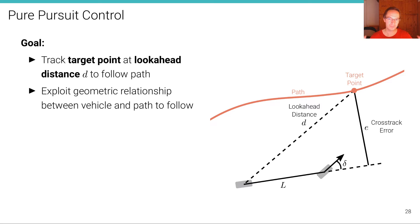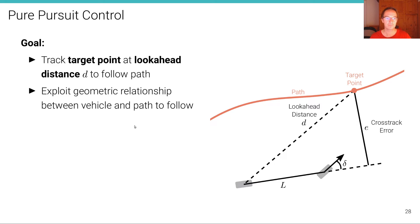Given the current state of the vehicle, knowledge of the location of the center of the rear wheels, and the look-ahead distance, we can calculate the target point on the path we want to follow. We want to adjust the steering angle delta such that the vehicle comes closer to that target point. In other words, we exploit the geometric relationships between the vehicle and the path in order to minimize the cross-track error, which is the lateral error between the target point and the vehicle.